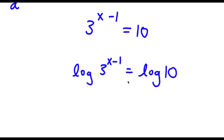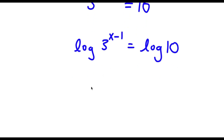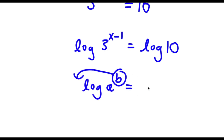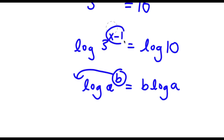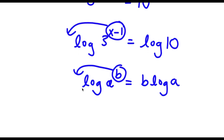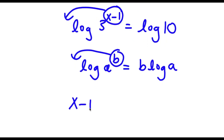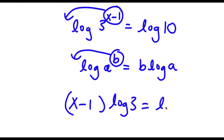Now if I have something in the form log a to the power of b, I can actually move this exponent b to the front of the logarithm. So this is going to equal b times log a. So in this case, log of 3 to the power of x minus 1 — I can move x minus 1 to the front. So this is going to equal x minus 1 times log 3 is equal to log 10.